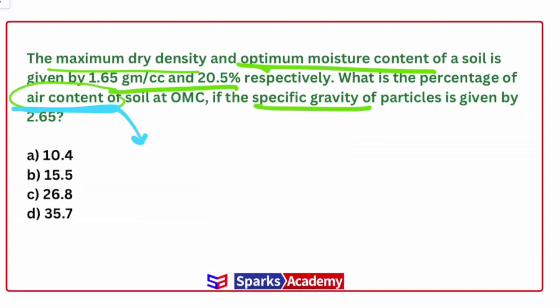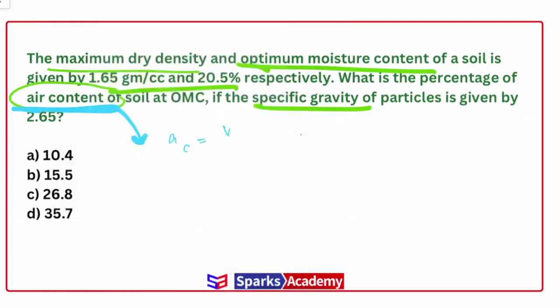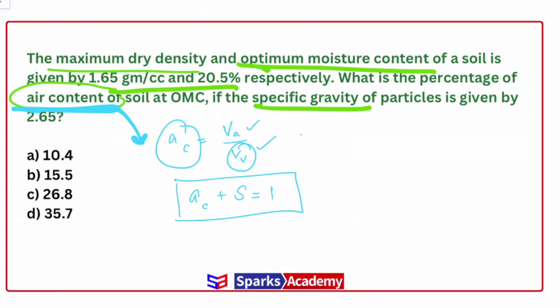The question asks for air content (AC). Air content is nothing but the volume of air present in the volume of voids. The relationship is: air content plus degree of saturation is equal to 1. So AC = volume of air divided by volume of voids, and degree of saturation S = volume of water divided by volume of voids.